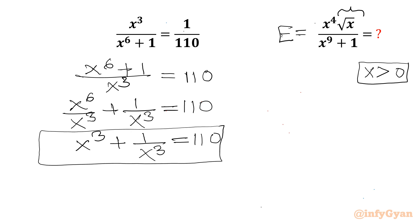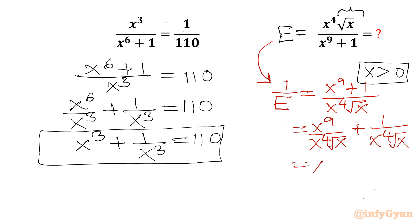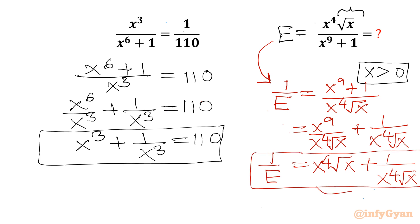Now I will also consider the reciprocal of our target expression. So if I write 1 over e, then on the right-hand side I will write x⁹ plus 1 divided by x⁴√x. Splitting the numerator gives x⁹ over x⁴√x plus 1 over x⁴√x, which simplifies to x⁴√x plus 1 over x⁴√x, and this equals 1 over e. So our answer will be e. We are going to calculate this using x³ plus 1 over x³ equals 110, and then take the reciprocal for our final answer.